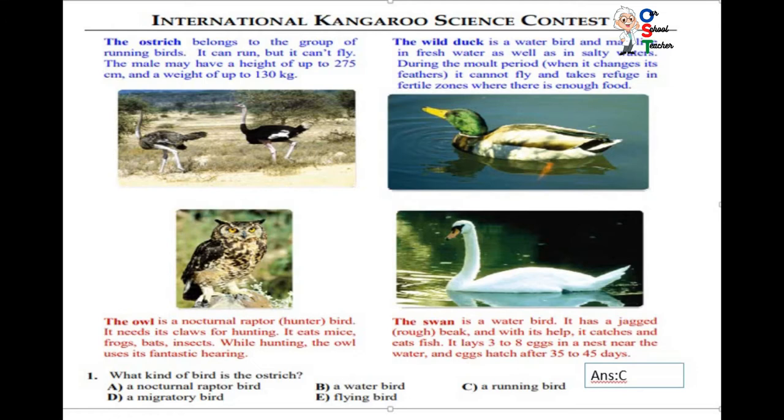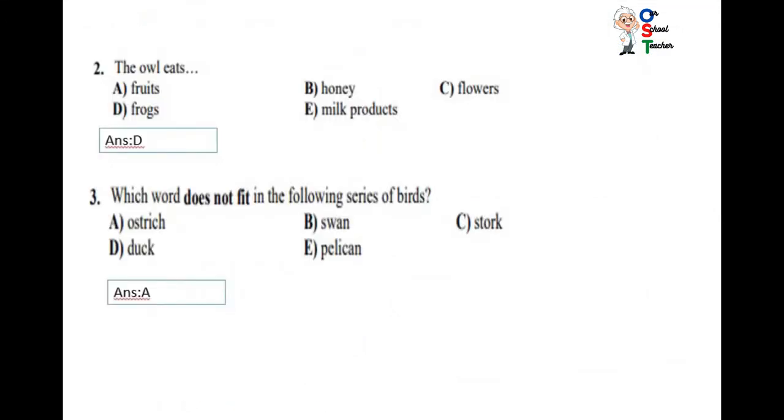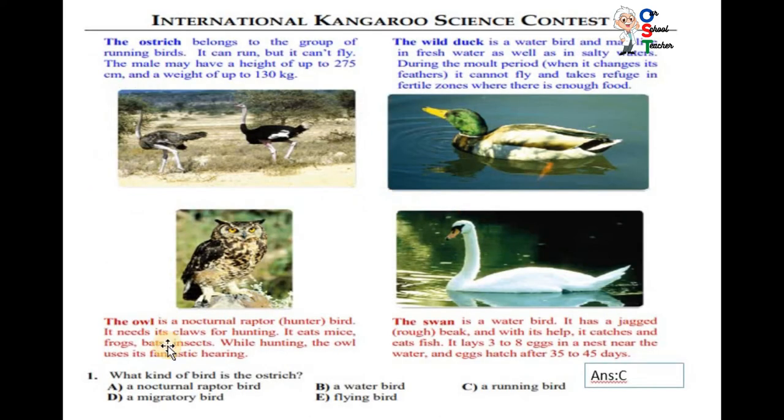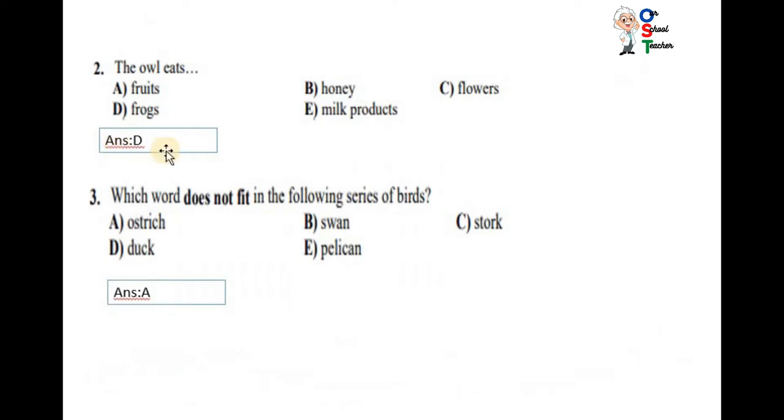Now question number two. The owl eats frogs, fruits, honey, flour, milk products. I think it eats frogs. You can see in this. It eats mice, frogs, bats, insects. So D is correct option.